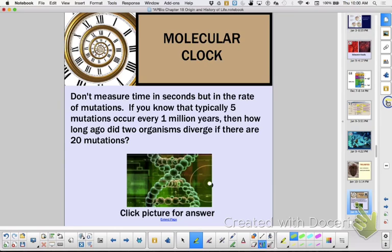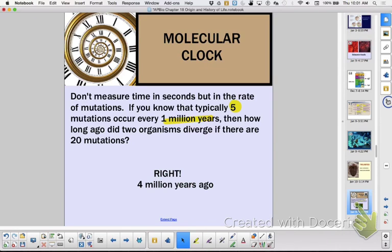And a molecular clock. You don't measure time in seconds, but in the rate of mutations. Because they have an idea about how fast mutations occur. If you know that typically five mutations occur every million years, then how long ago did two organisms diverge if there are 20 mutations? This is a molecular clock based on mutations. If five mutations occur every million years, then how long ago did two species diverge if there are 20 mutations that separate them? Did you guess four? Because five goes into, if you have 20 mutations, you divide, five, ten, fifteen, twenty-four, four million years.